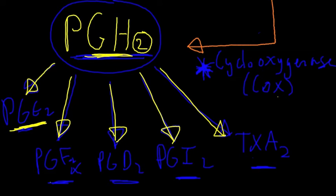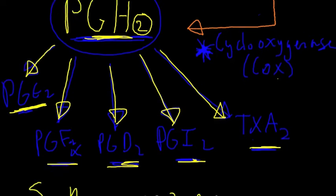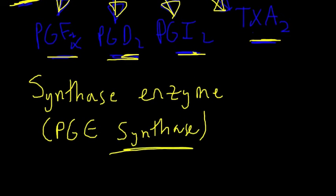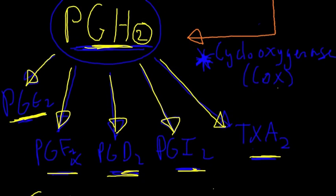Likewise, if a cell needed PGF2α, or PGD2, PGI2, or thromboxane A2, we would get similar specific synthase biochemical reactions taking place.